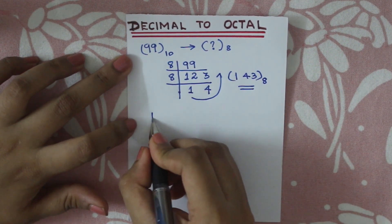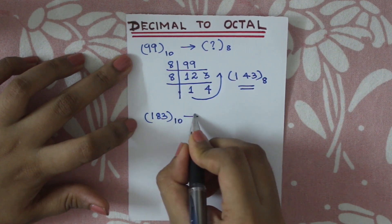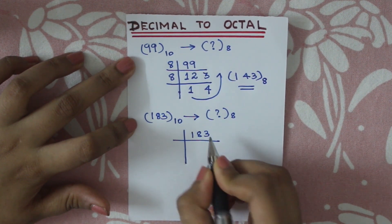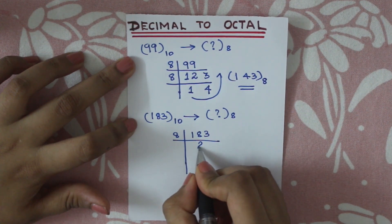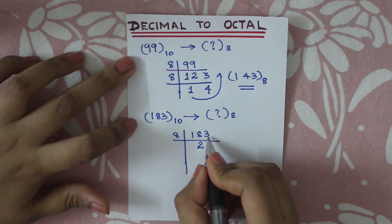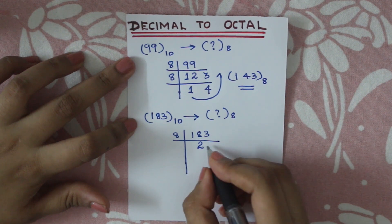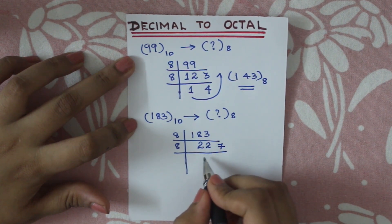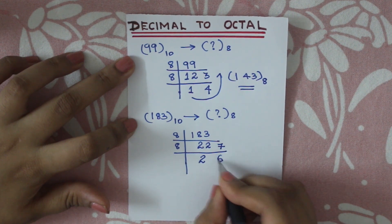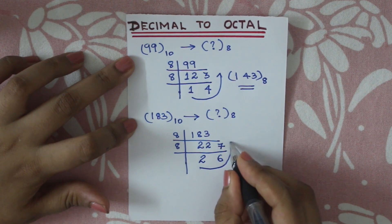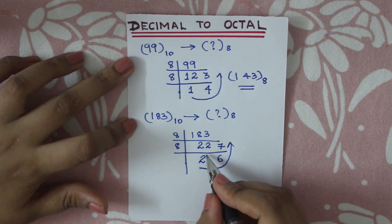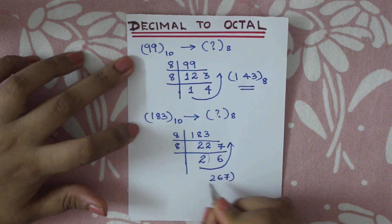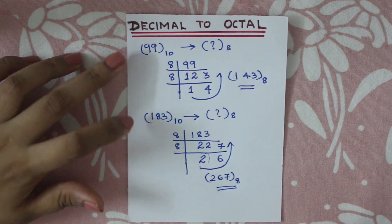Let's look at one more example: 183 is the decimal number to convert to octal. Dividing 183 by 8: 8 goes 22 times with remainder 7. Then 22 divided by 8 is 2 remainder 6. Then 2 divided by 8 is 0 remainder 2. Reading remainders bottom up, the octal value is 2, 6, 7.